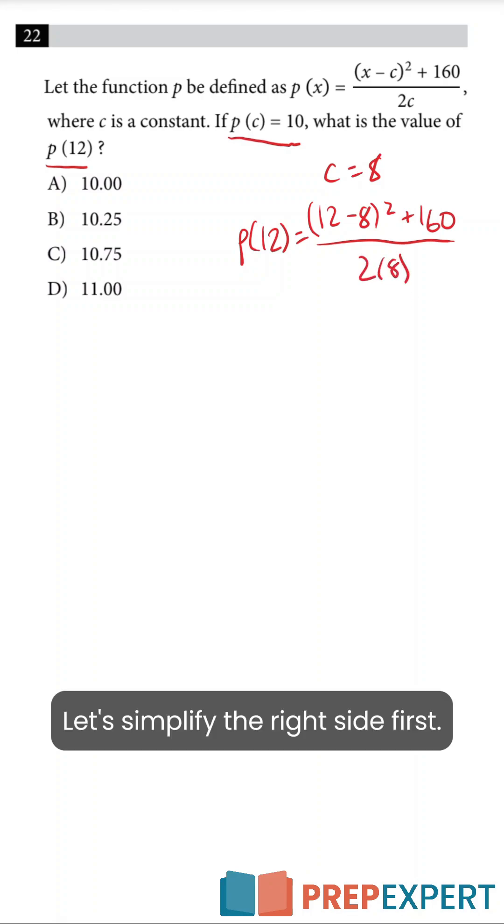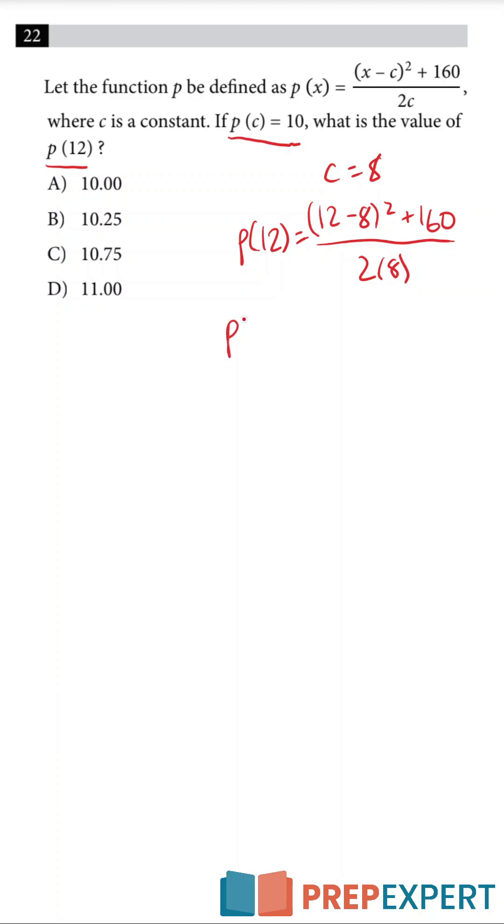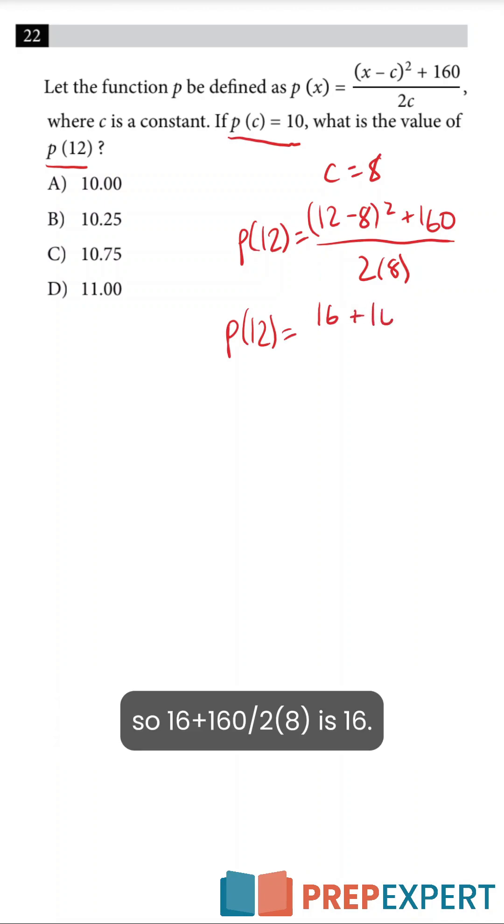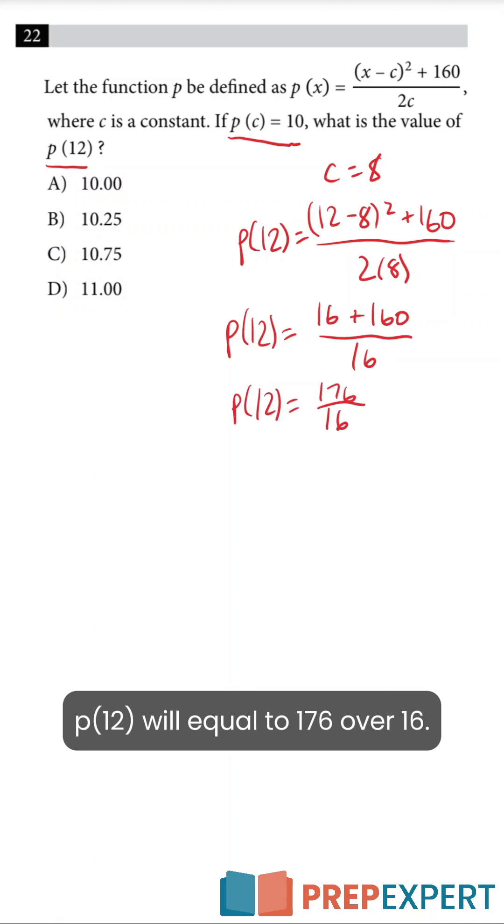Let's simplify the right side first. p of 12 equals 12 minus 8 is 4, and 4 squared is 16. So 16 plus 160 over 2 times 8 is 16. p of 12 will equal 176 over 16.